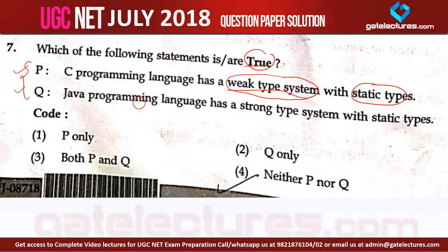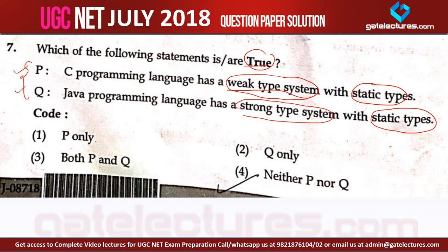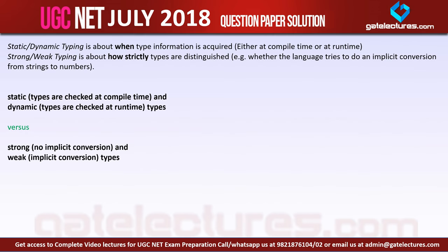And option number 2 is saying: Java programming language has a strong type system with static typing. So before solving this, let me explain what is a weak type system and what is a strong type system.